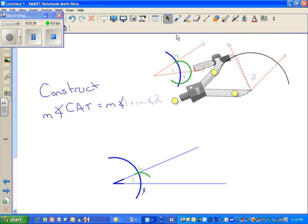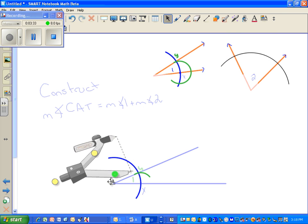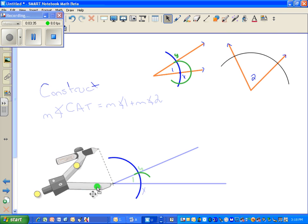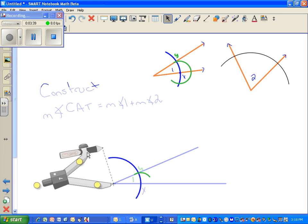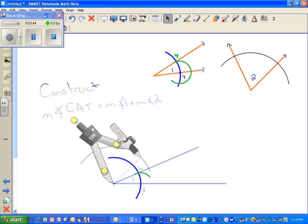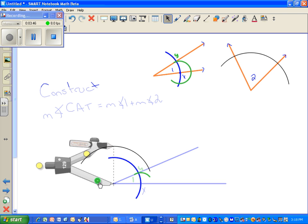Now keeping my compass setting the same, I'm going to come down to my vertex, and I'm going to swing that same arc. Now I'm swinging it out past angle 1 because I know that angle 2 is going to go past angle 1.